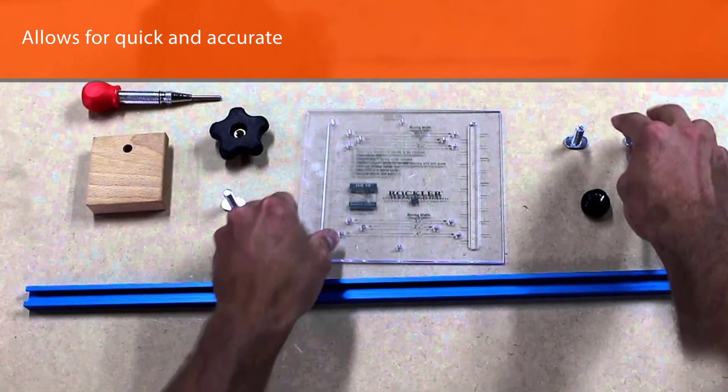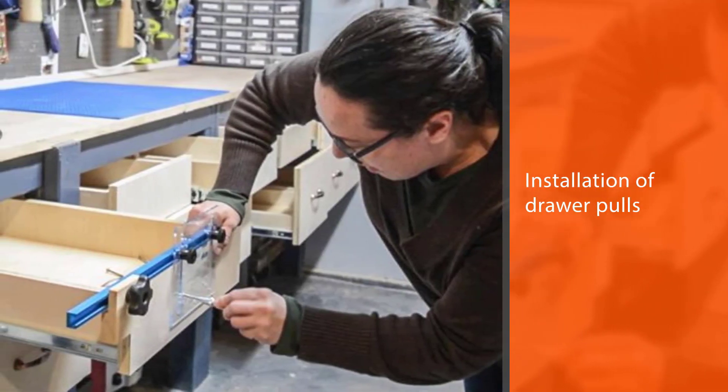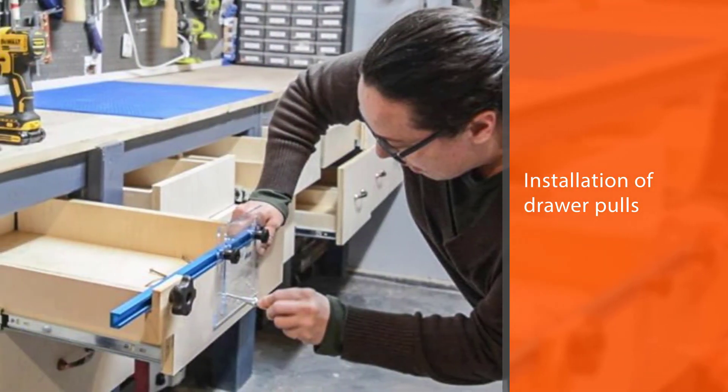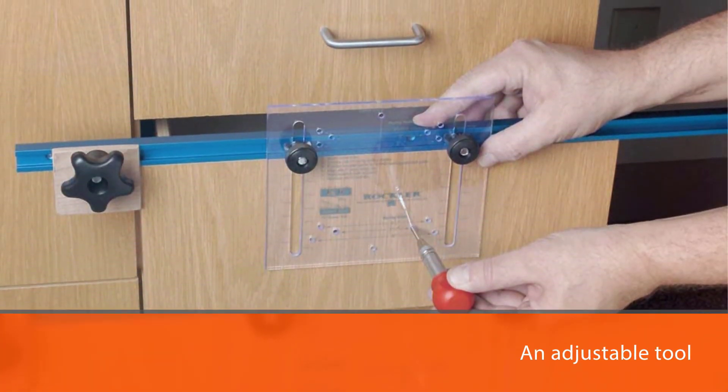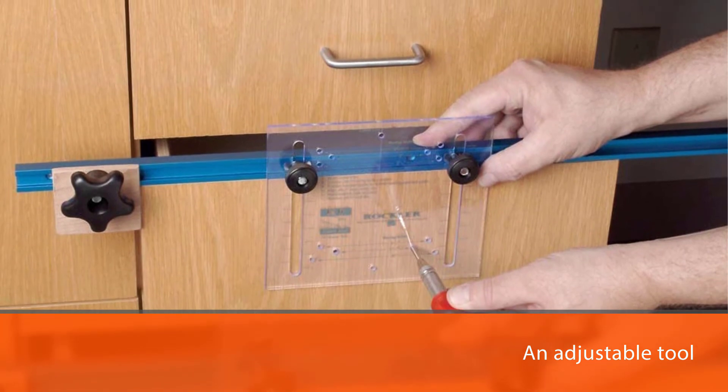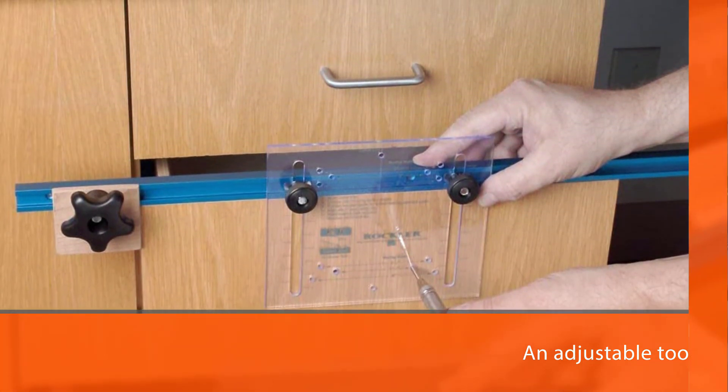It's an adjustable tool and once you set it up with markings and drill points, this will be the only hardware jig that you will need for all of the same width drawers in your kitchen. It offers spacing for 2.5, 3, 3.5, 3.75, 4, and 96 millimeters.